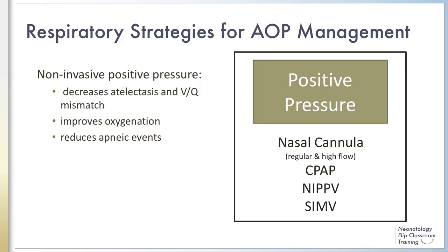Non-invasive positive pressure strategies such as nasal CPAP, synchronized NIPPV, and nasal cannula splint open airways and decrease atelectasis and VQ mismatch, improve oxygenation, and reduce apneic events. Splinting open the upper airway also decreases the risk of obstructive apnea. CPAP may also decrease the severity and duration of desaturation during central apneic events by facilitating the maintenance of a higher end-expiratory lung volume.